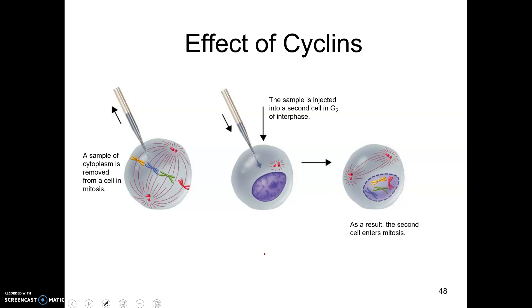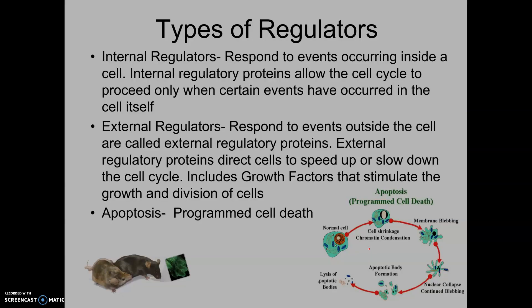And this is just showing that if they take some of the chemicals from a cell that's in the middle of mitosis and insert it into a cell that's not dividing, that cell will actually be stimulated to start dividing. So that's one of the ways they discovered some of these chemicals. They said, wow, there's some kind of chemical in the dividing cell that if I put it in the non-dividing cell, it sends a signal and tells the cell to start dividing.